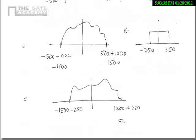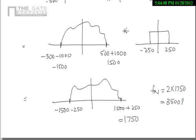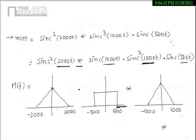So the highest frequency present in the signal is 1750. The Nyquist frequency fn is 2 times 1750, which equals 3500 Hz. That's how we calculate the Nyquist frequency for the given signal: sinc squared 2000t convolved with sinc cubed 1000t multiplied by sinc 500t.